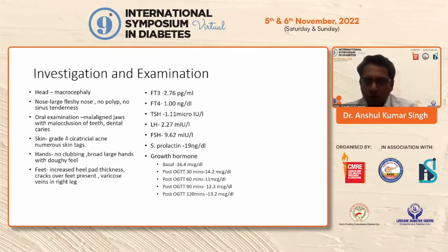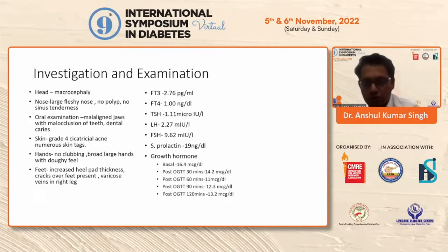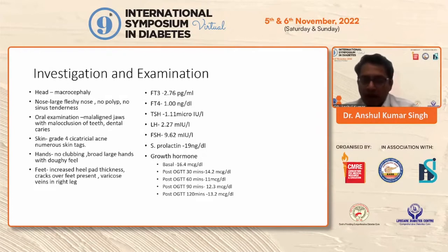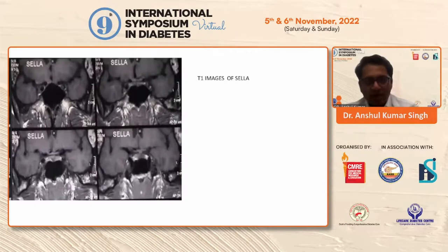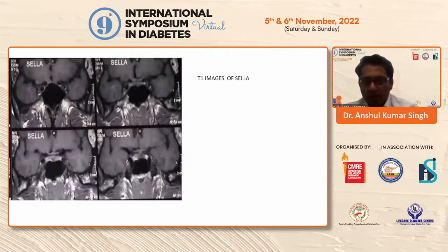We went for a growth hormone analysis. The basal was raised, and we subsequently subjected the patient to a glucose suppression test for growth hormone. On suppression, which ideally the nadir should have been below 1, it came out to be 11. And thus a diagnosis of acromegaly was made. We went ahead with an MRI and were able to diagnose and pinpoint a pituitary microadenoma.